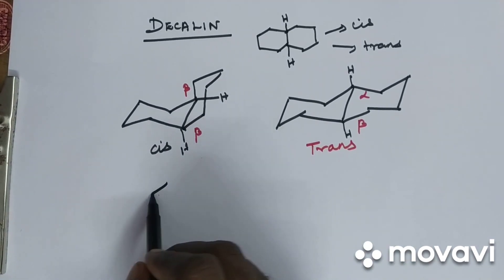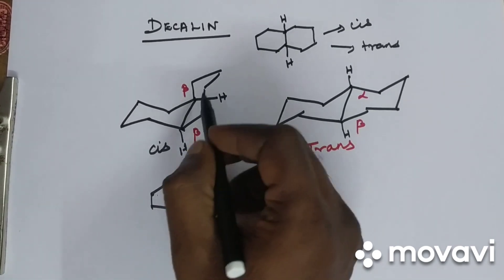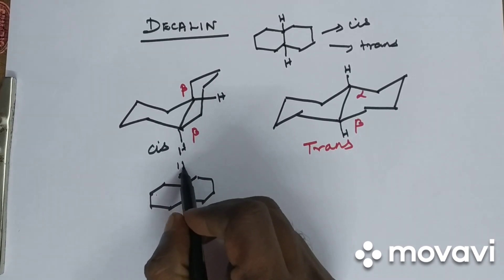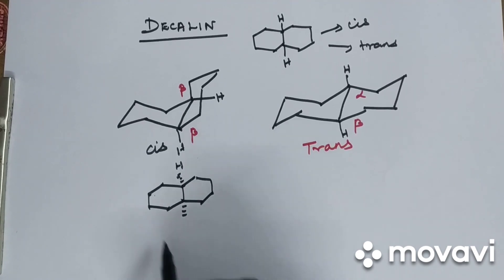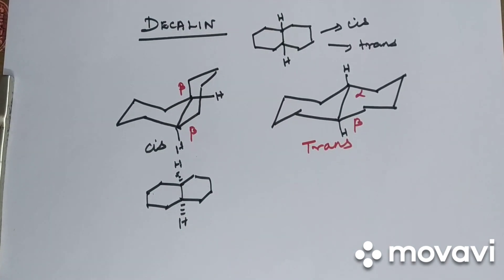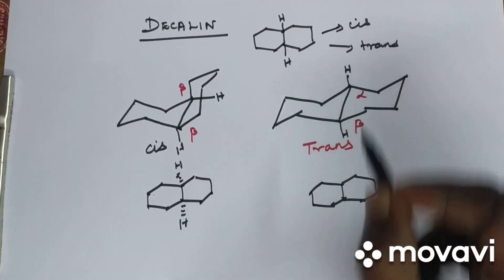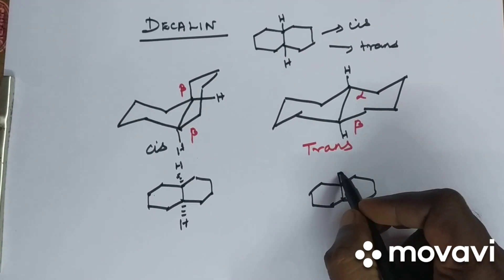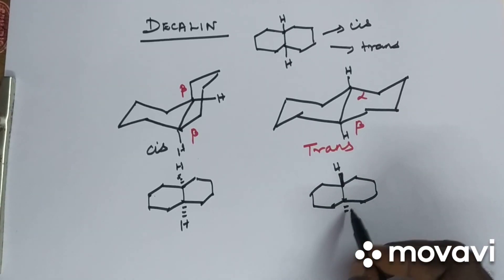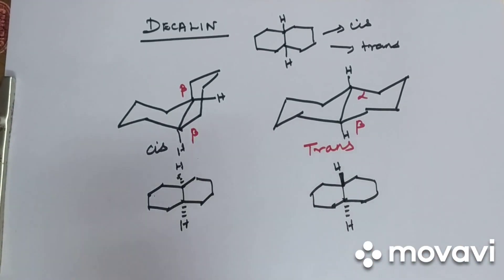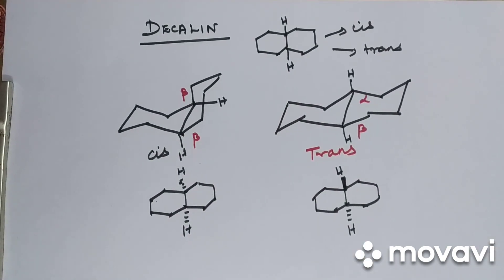In wedge notation: for cis decalin, both hydrogens are down — alpha-alpha — so both are drawn with dotted wedges. This is cis decaline. For trans decalin, one hydrogen is above — beta — drawn with a dark wedge, and the other hydrogen is down — alpha — drawn with a dotted wedge. This is trans decaline.